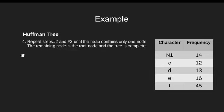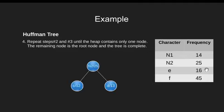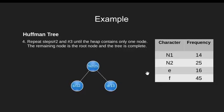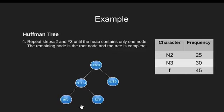So we again extract the two nodes with minimum frequencies. Here we have C and D with least frequencies. We form a new internal node and add node C to its left and node D to its right, with its frequency as the sum of its children. Finally, we add this new internal node to our min heap. Again we extract the two nodes with minimum frequencies. Here we have N1 and E with least frequencies. We form a new internal node and add node N1 to its left and node E to its right, with its frequency as the sum of its children. Finally, we add this new internal node to our min heap.